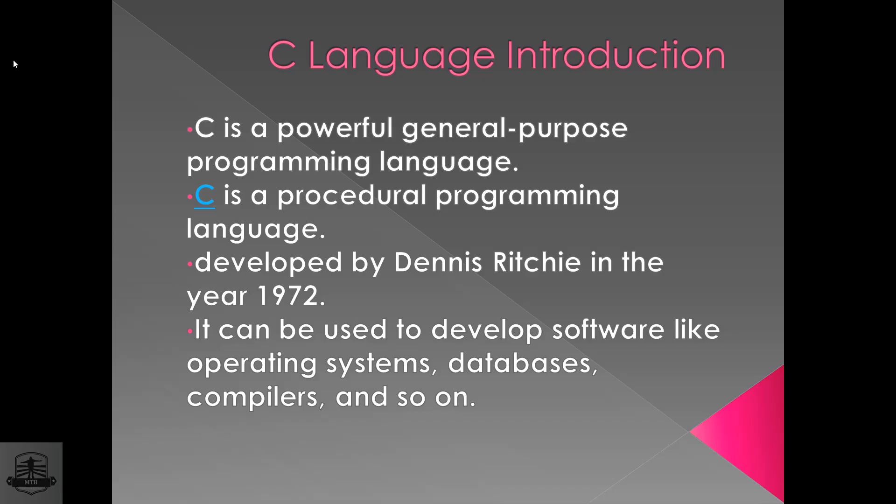The second point is Procedural Language — step by step. A code will run step by step. So C is a Procedural General Purpose language. It was developed by Dennis Ritchie in 1972.